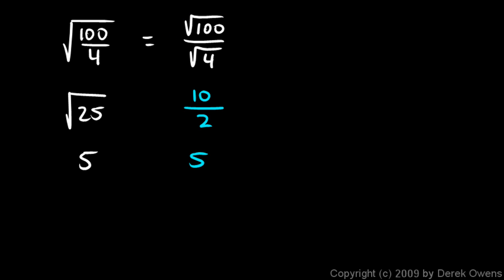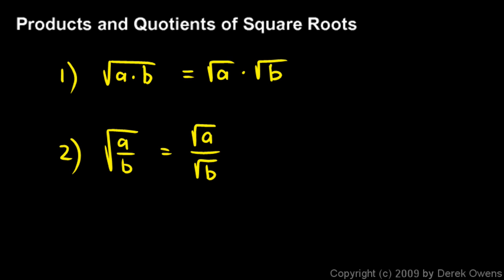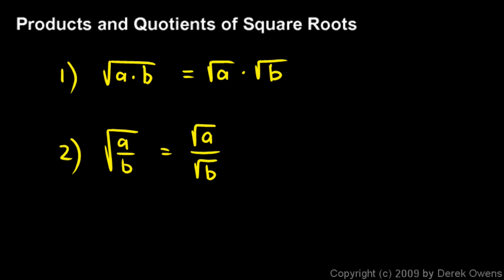This is true not just in these particular cases, but in any cases. The square root of A times B is equal to the square root of A times the square root of B. You can take a product under a radical and separate it into two radicals, or combine two radicals that are multiplied into a single product under the radical. The same thing works for division: the square root of A divided by B can be split into the square root of A over the square root of B, or combined into a single fraction under one radical.